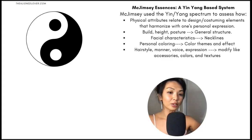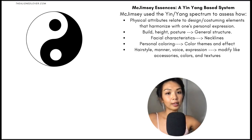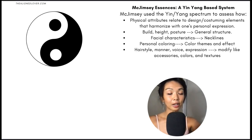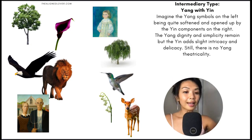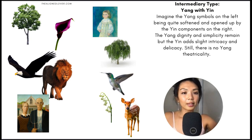Before we get into the Classic examples, let's briefly go over the McJimsy philosophy. McJimsy used the yin-yang spectrum to assess not only physical attributes but more expressive attributes like mannerisms, voice, expression, and overall persona. All of these had to be contemplated to create the most personal and authentic expression. The Classic is an intermediary type in the McJimsy system — it sits between the extremes of yin and yang on the spectrum, but it has a little bit more yang to it.